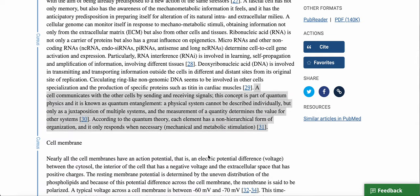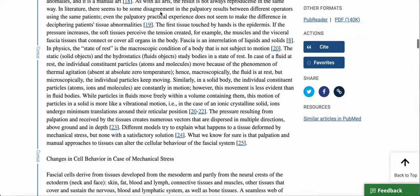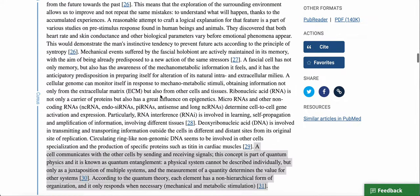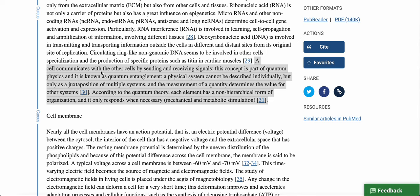One of the main things that I wanted to go through over here, changes in cell behavior in cases of mechanical stress. A cell communicates with other cells by sending and receiving signals. This concept is part of quantum physics and it is known as quantum entanglement. A physical system cannot be described individually, but only as a juxtaposition of multiple systems and the measurement of a quantity determines the value for other systems. According to the quantum theory, each element has a non-hierarchal form of organization and it only responds when necessary.